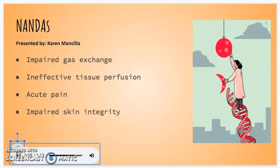Impaired skin integrity related to impaired circulation and decreased mobility can be manifested by skin and tissue color changes and swelling around the affected areas.